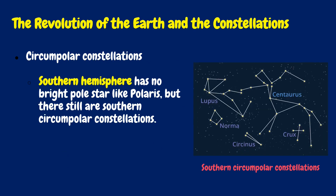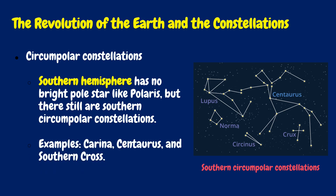The Southern Hemisphere has no bright pole star like Polaris, but there are still southern circumpolar constellations like Carina, Centaurus, and the Southern Cross.